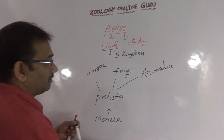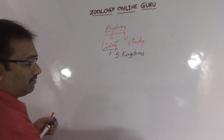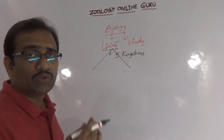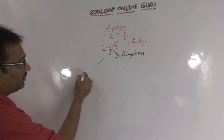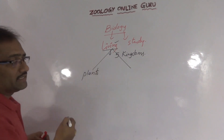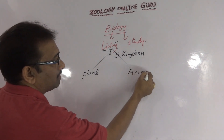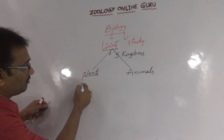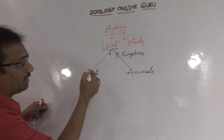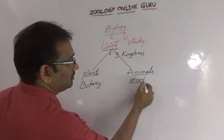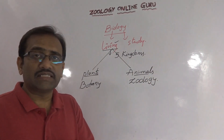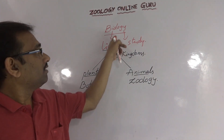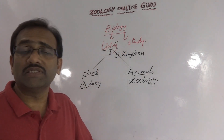Next, coming to what is included in biology: living organisms are broadly categorized into two major groups — study of plants and study of animals. Study of plants is called botany and study of animals is called zoology. So zoology and botany are collectively present in biology.